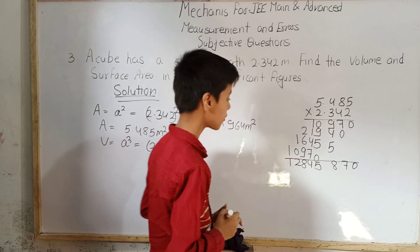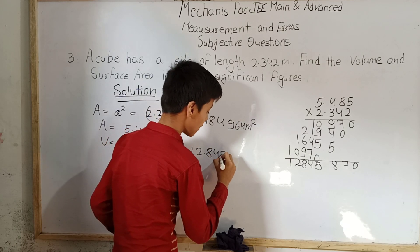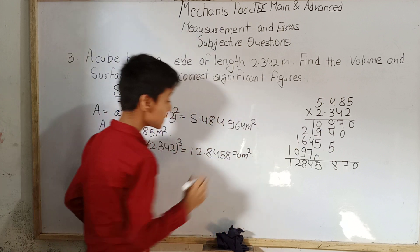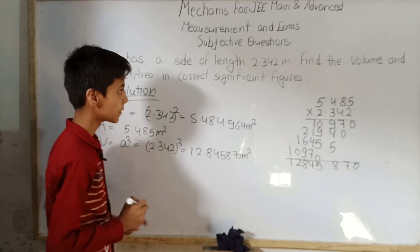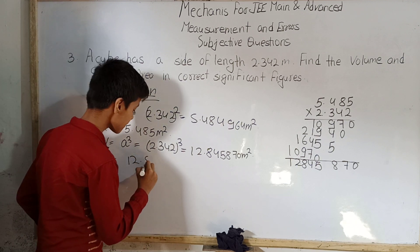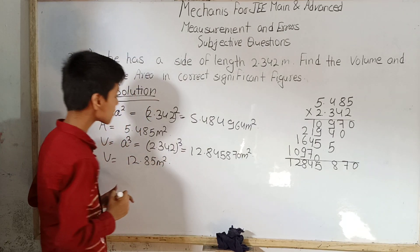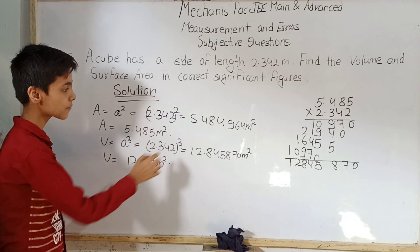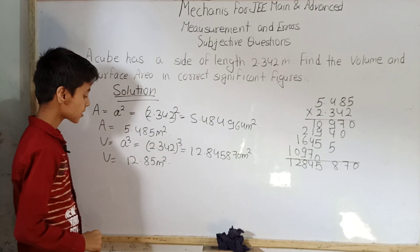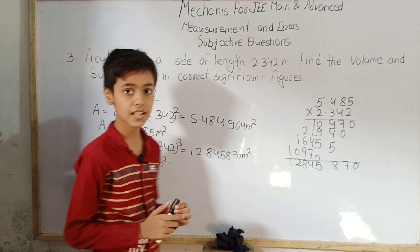So the volume comes out to 12.845870 meter cubed. Rounding to the correct number of significant figures, the volume equals 12.85 meter cubed. To summarize: the surface area of the cube is 5.485 meter squared and the volume of the cube is 12.85 meter cubed.